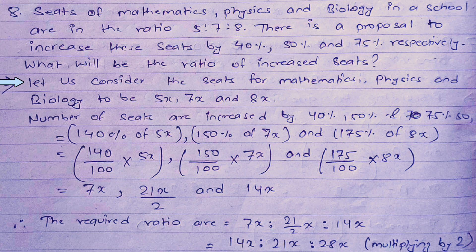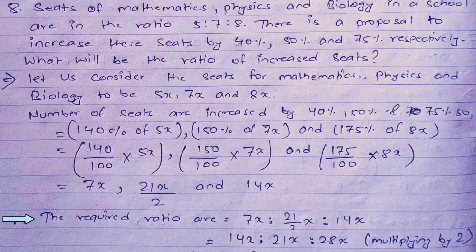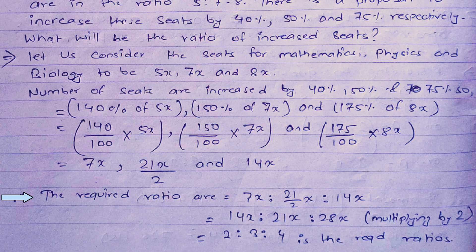We consider the initial seats for mathematics, physics, and biology to be 5x, 7x, and 8x. After the increases: mathematics = 140% of 5x = 7x; physics = 150% of 7x = 21x/2; biology = 175% of 8x = 14x. The ratio is 7x : (21x/2) : 14x. Multiplying all terms by 2: 14 : 21 : 28. Simplifying by dividing by 7, the ratio becomes 2 : 3 : 4.